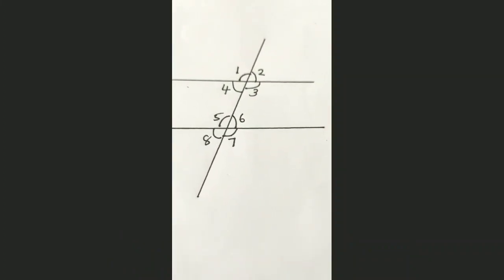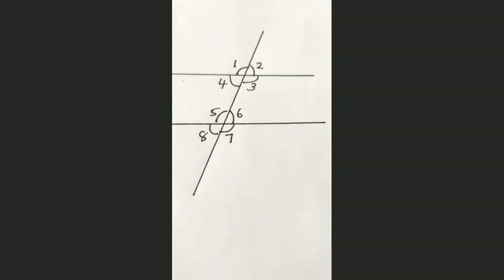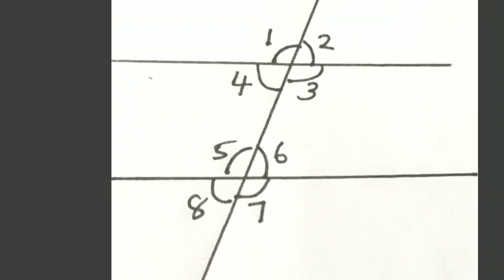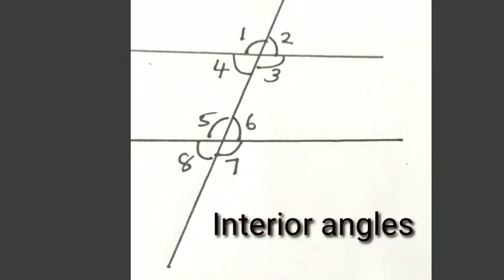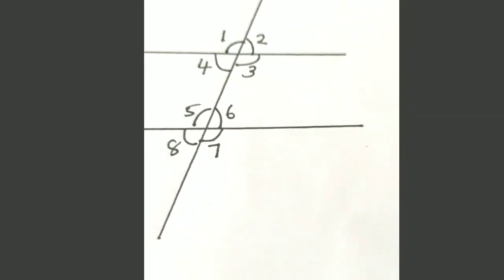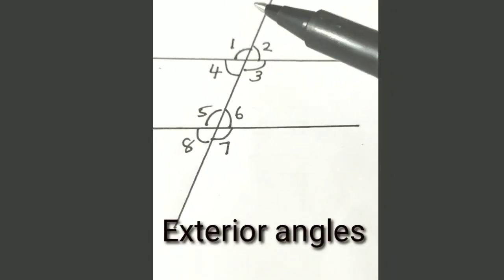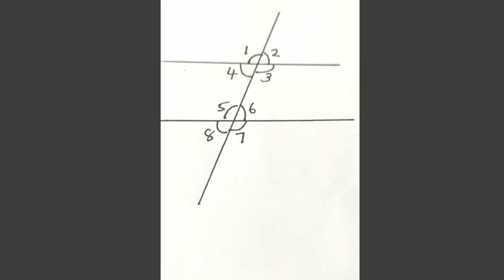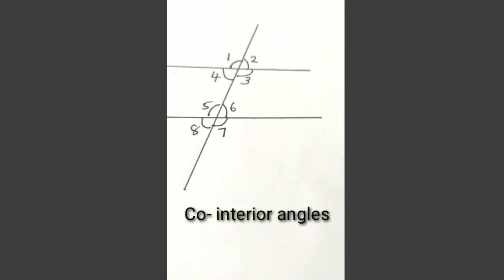Here you can see two parallel lines and another line that cuts across these two parallel lines. Eight angles are formed there. You already know what the interior angles and exterior angles are. The interior angles are angle 3, angle 4, angle 5, and angle 6. The exterior angles — outside the parallel lines — are angle 1, angle 2, angle 7, and angle 8.